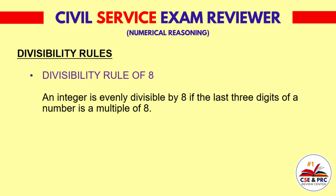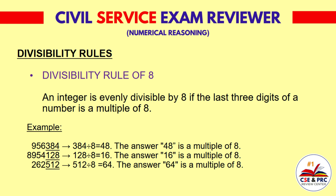Divisibility Rule of 8: An integer is evenly divisible by 8 if the last 3 digits of a number are a multiple of 8. For example, 956,384: the last 3 digits 384 divided by 8 equals 48. For 8,954,128: the last 3 digits 128 divided by 8 equals 16. For 262,512: the last 3 digits 512 divided by 8 equals 64.